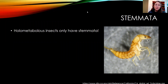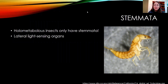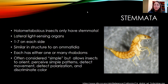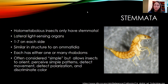Stemmata: holometabolous insects only have stemmata — they don't have compound eyes or ocelli. Here's a beetle larva showing about six to seven stemmata, which are always lateral on the side of the head. They are light-sensing organs that can also form images; there tend to be one to seven on each side. They're similar in structure to a single omatidum, and each has either one or many rhabdoms. Though often considered simple eyes, stemmata actually allow holometabolous insects to orient themselves, perceive simple patterns, detect movement, detect polarization, and discriminate color. They're really great at detecting movement, so they're not that simple — just fewer in number than in a compound eye.